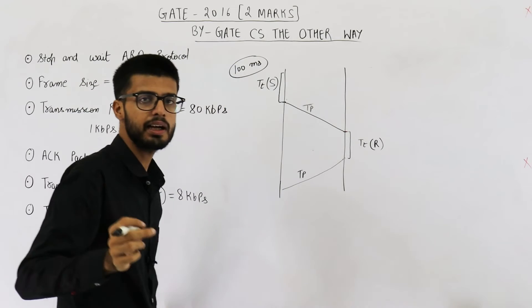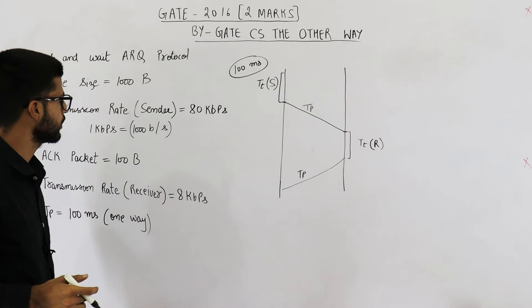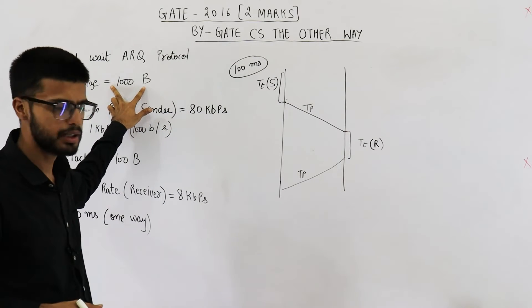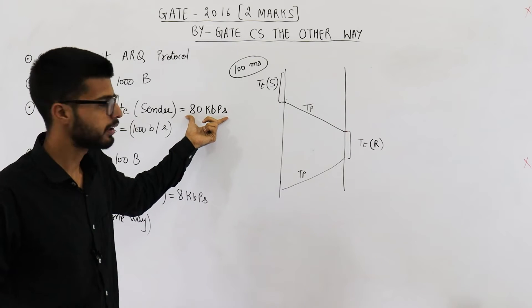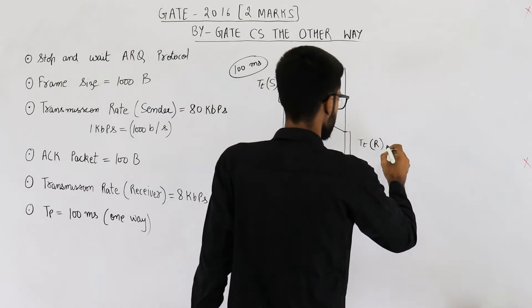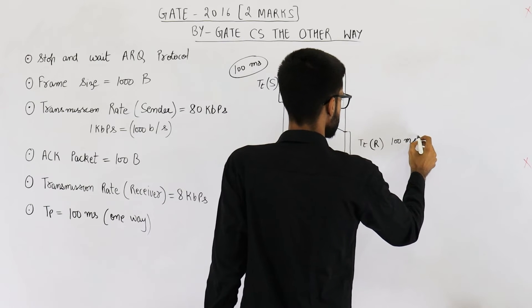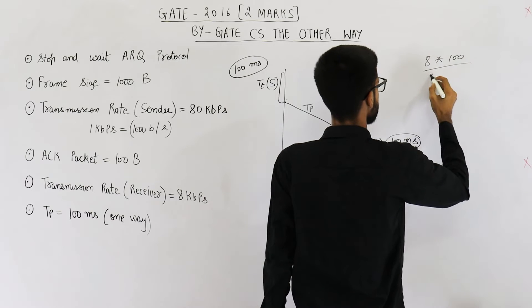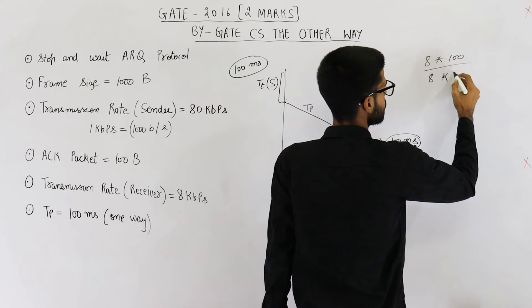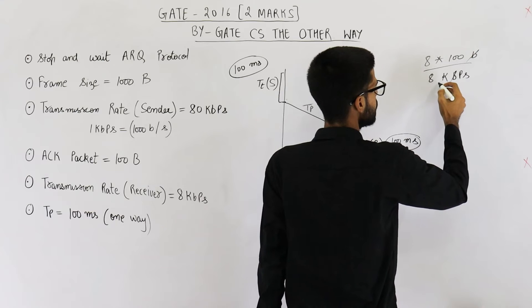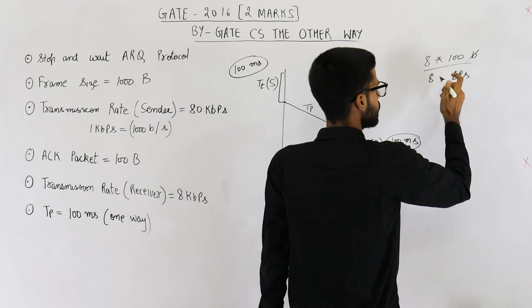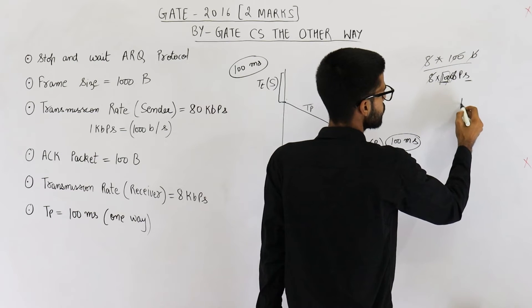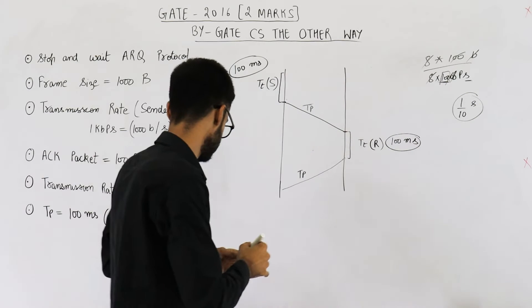Now let us find the transmission time at the receiver side — that is, the transmission time for the acknowledgement packet. This is 100 bytes divided by 8 kbps. The numerator and denominator are both divided by 10 compared to before: 100 bytes / 8 kbps = 800 bits / 8000 bps = 1/10 seconds = 100 milliseconds. So TTR is also 100 milliseconds.